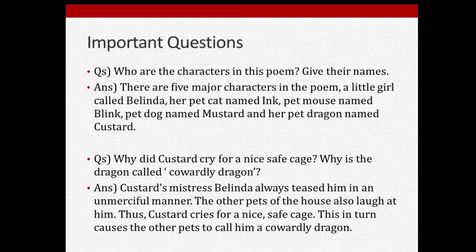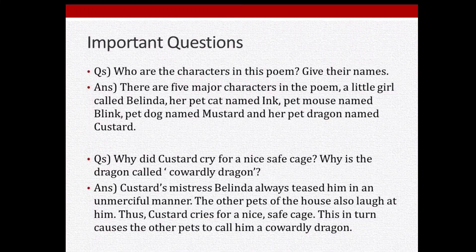Let's discuss some important questions. First question: Who are the characters in the poem? Give their names. There are five major characters: a little girl called Belinda, her pet cat named Ink, pet mouse named Blink, pet dog named Mustard, and her pet dragon named Custard.